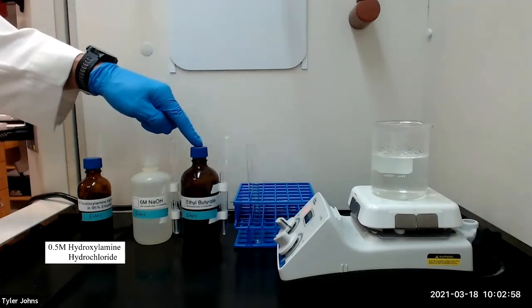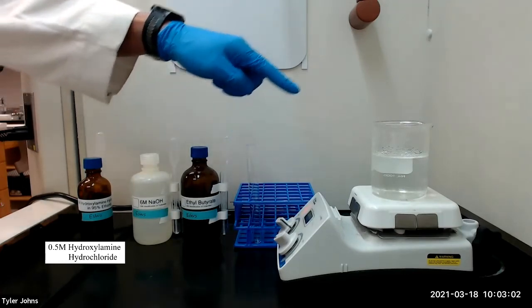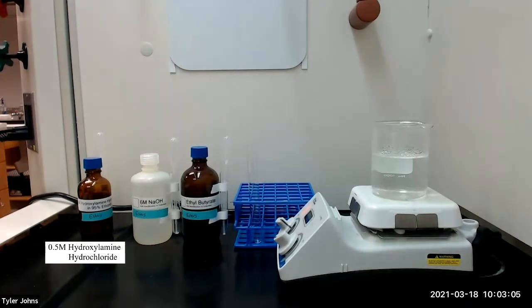We will then dissolve six drops of the ethyl butyrate in the mixture and heat the mixture in a hot water bath until it boils for a few minutes.